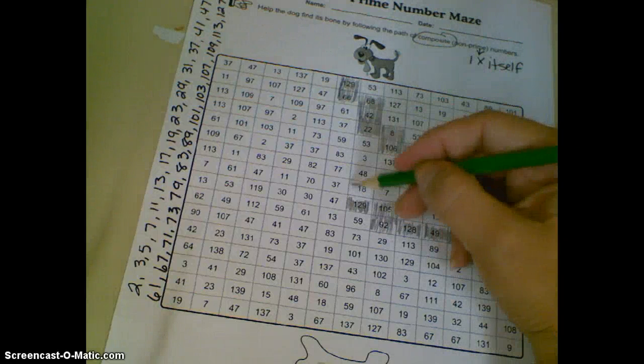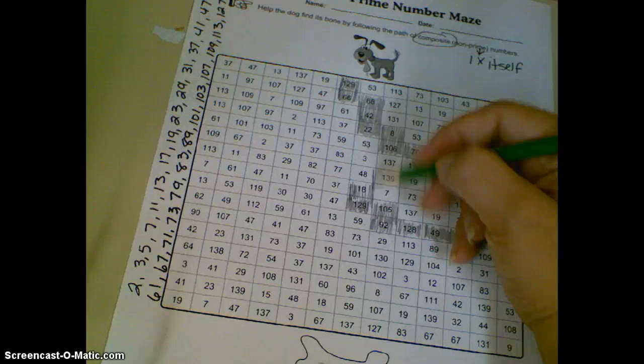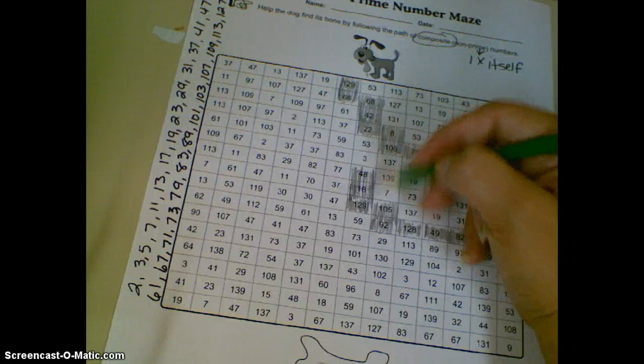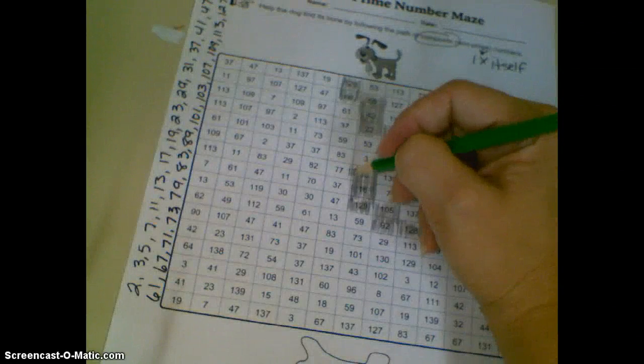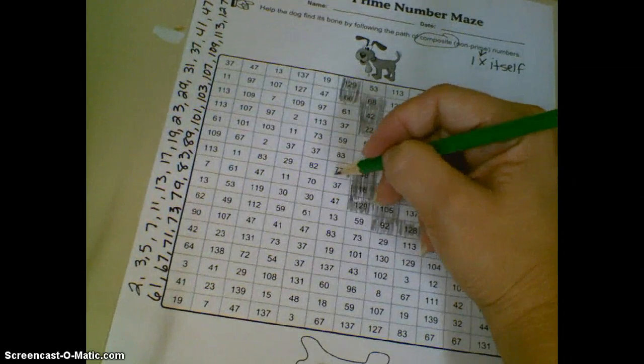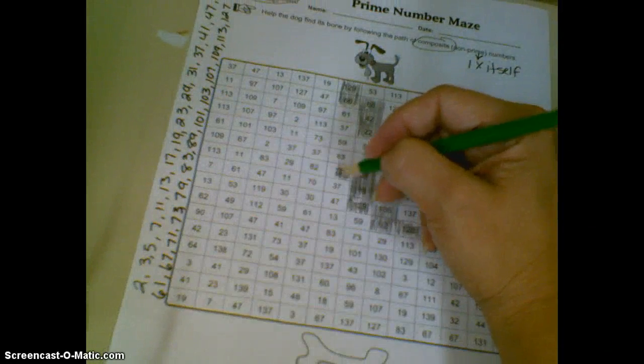And then we've got 18 is even, 48 is even, 3 is prime, don't go that way. 77 is composite. Remember, anything where it repeats like that is divisible by 11. 11 times 7 is 77.